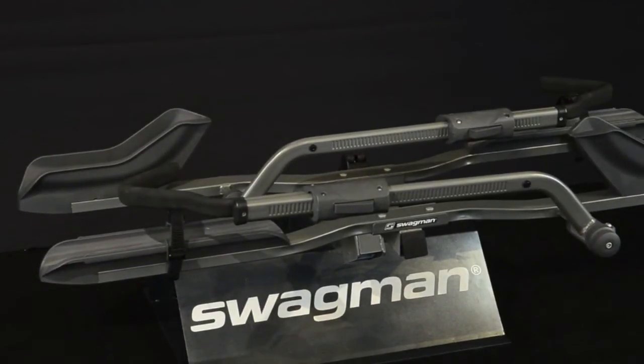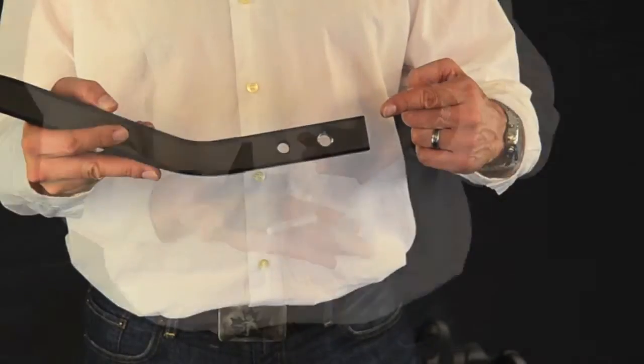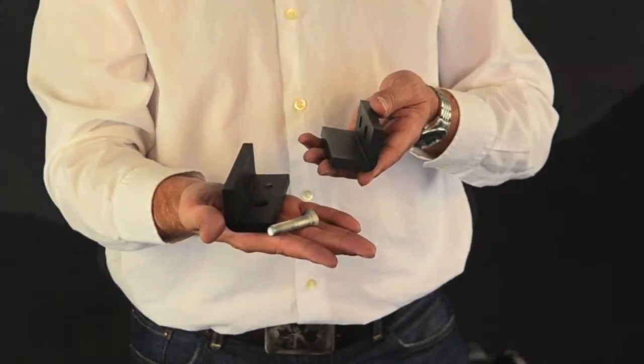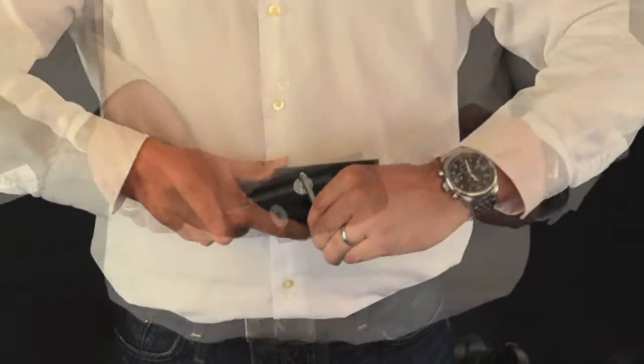The Semi 2.0 uses a one and a quarter inch draw bar to attach to either a one and a quarter inch receiver or two inch receiver when using our Swagman universal adapter.